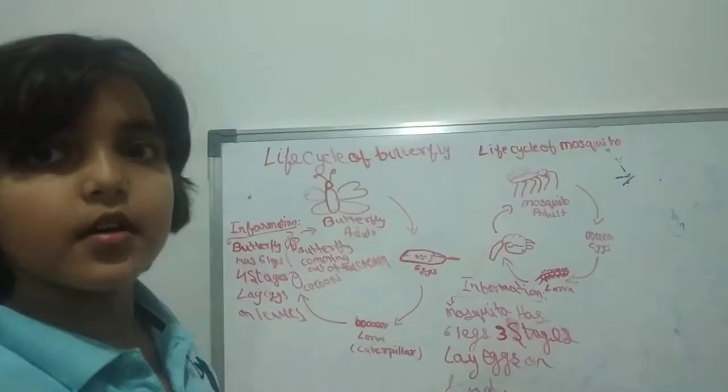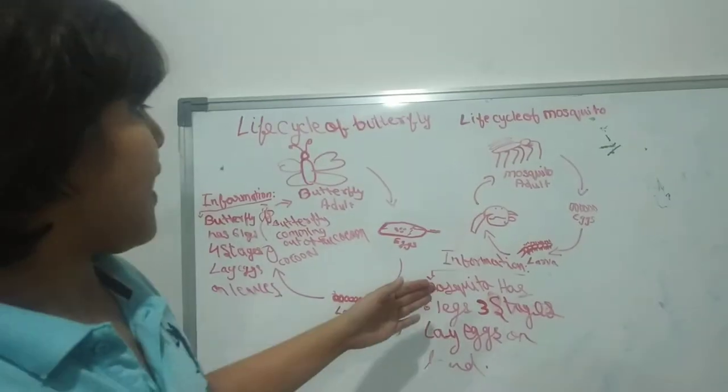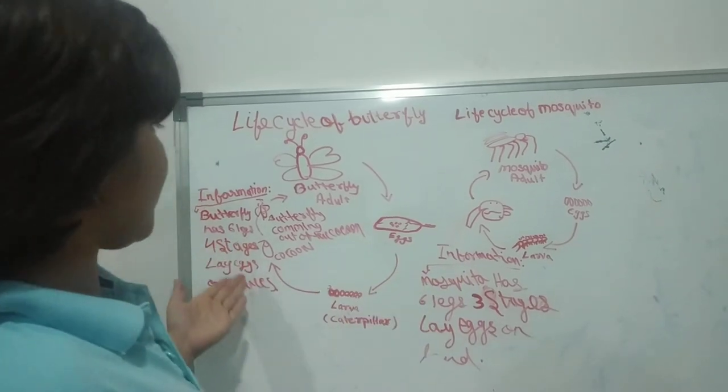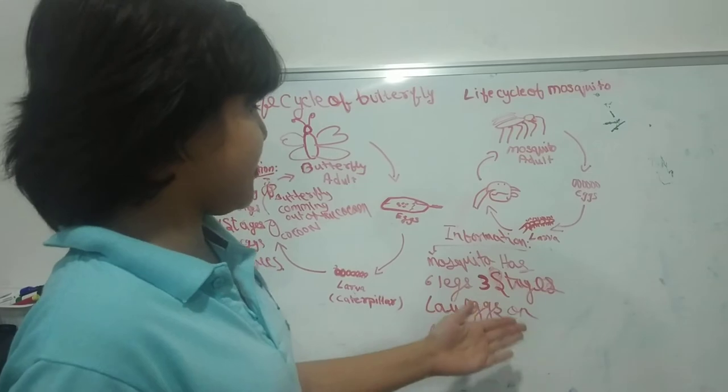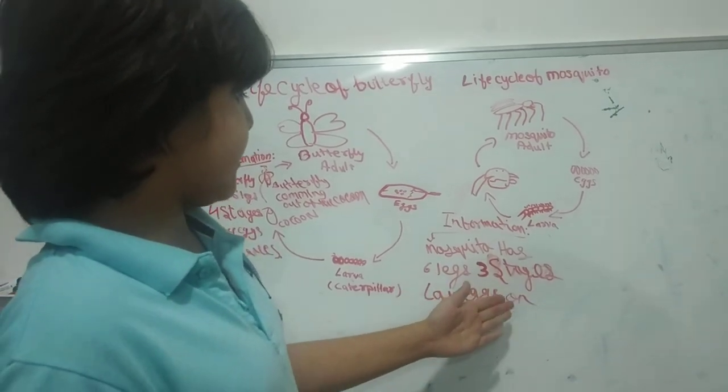So what is the special information for mosquito? Mosquito has six legs like a butterfly. They have three stages and they lay eggs on the land.